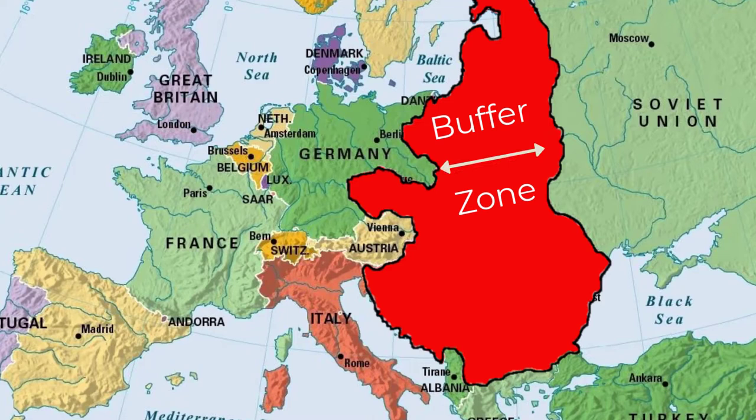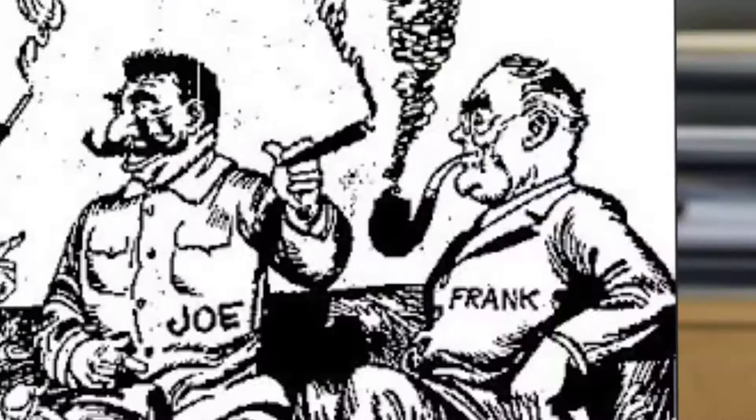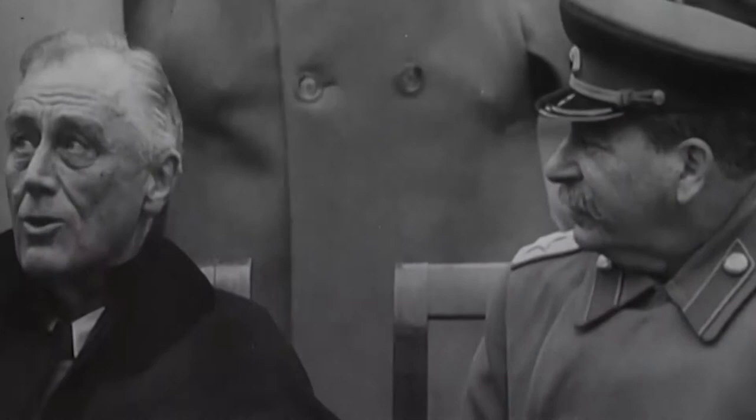At this time, the USA was so concerned with defeating Japan that it needed Russian support to win the war. Therefore, Roosevelt knew he couldn't be too tough on Stalin at Yalta and needed to keep Stalin on side. We have to remember that the USA didn't have the atomic bomb at this time, so it wasn't in such a strong bargaining position as it would be at later conferences.